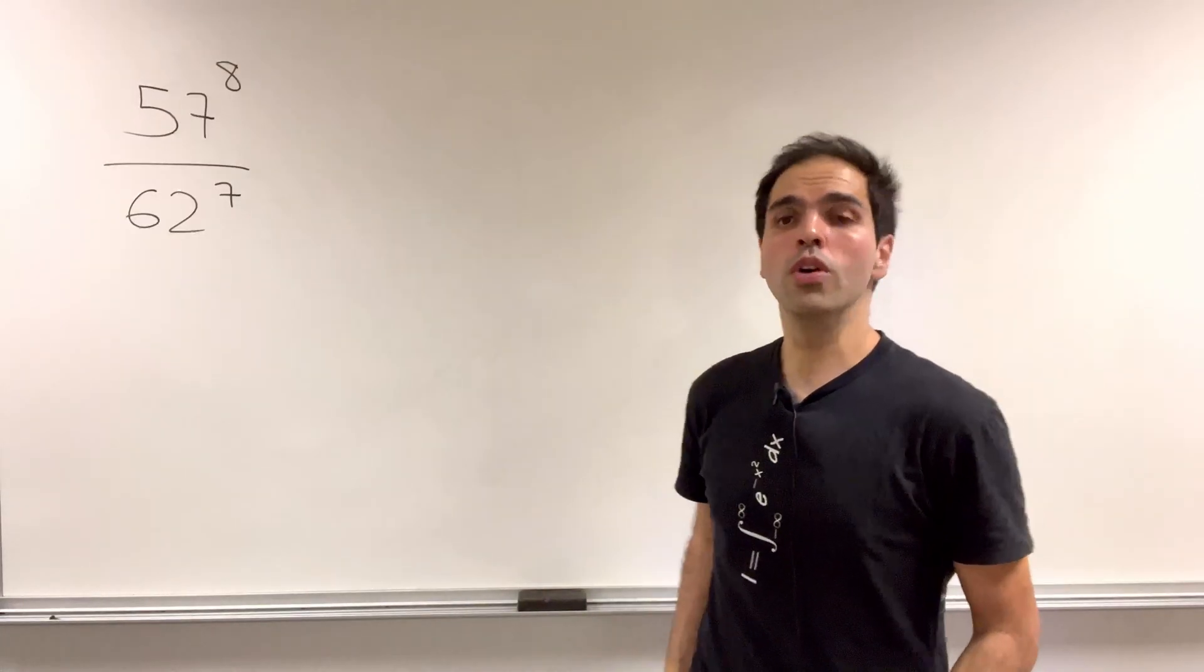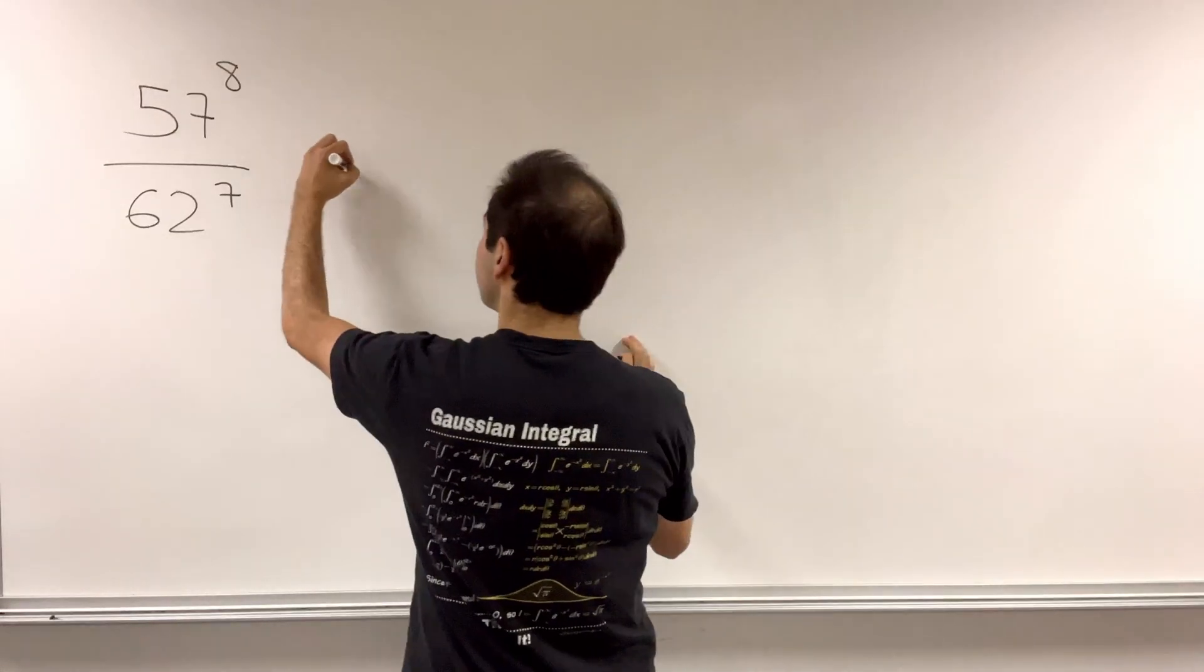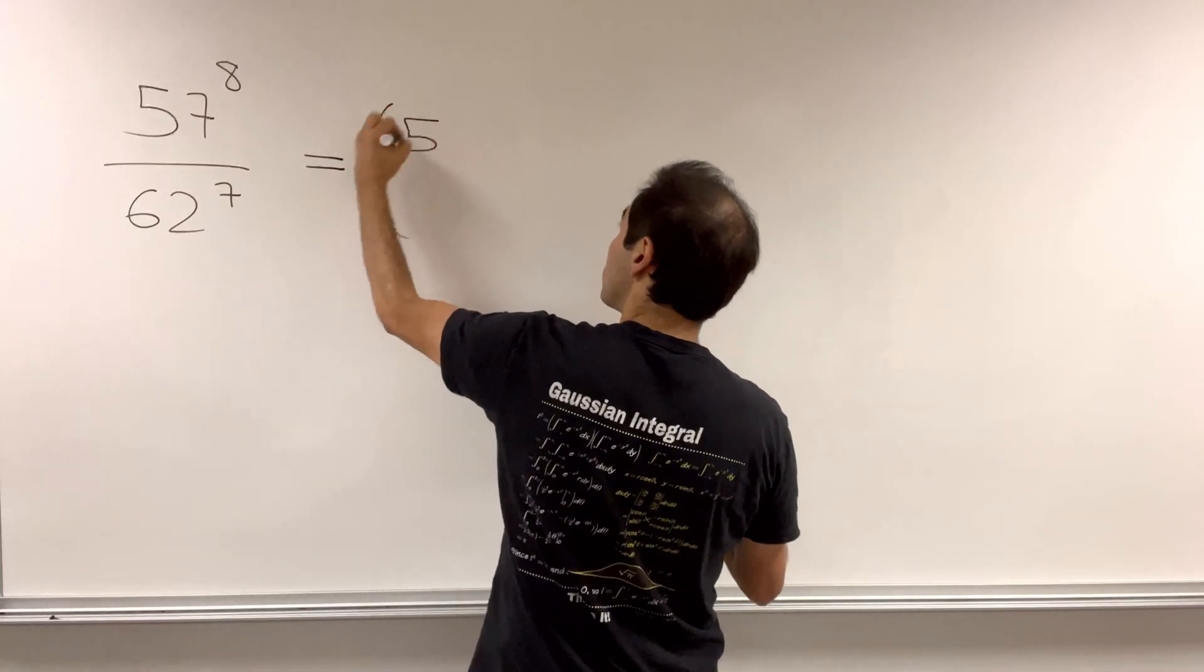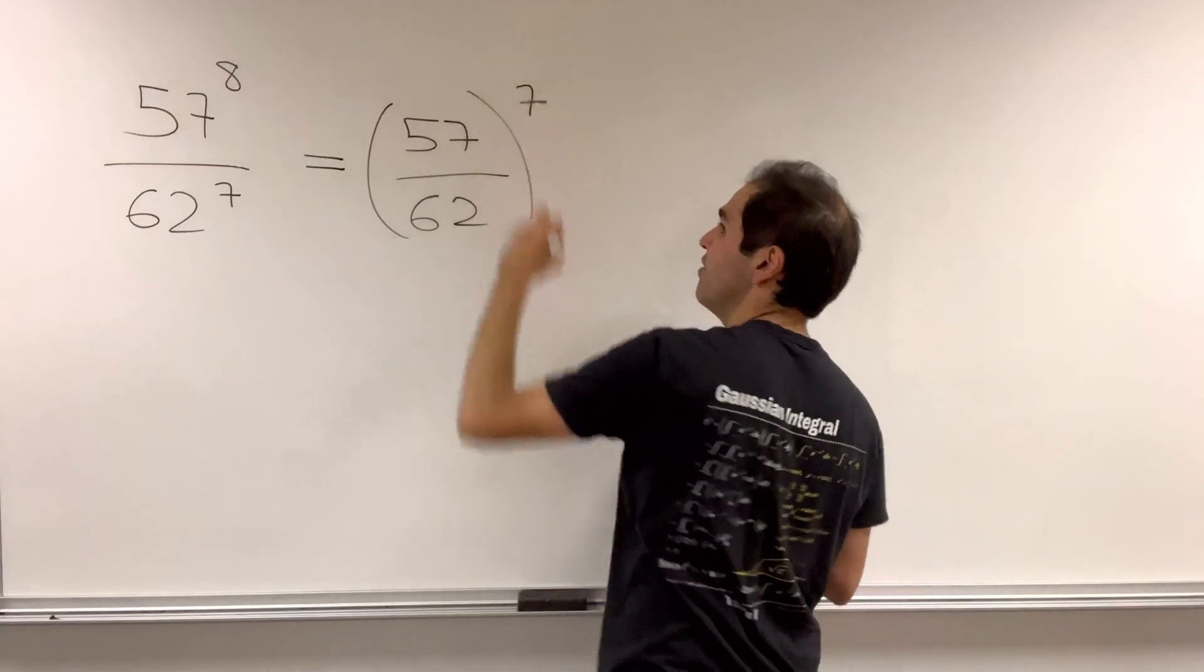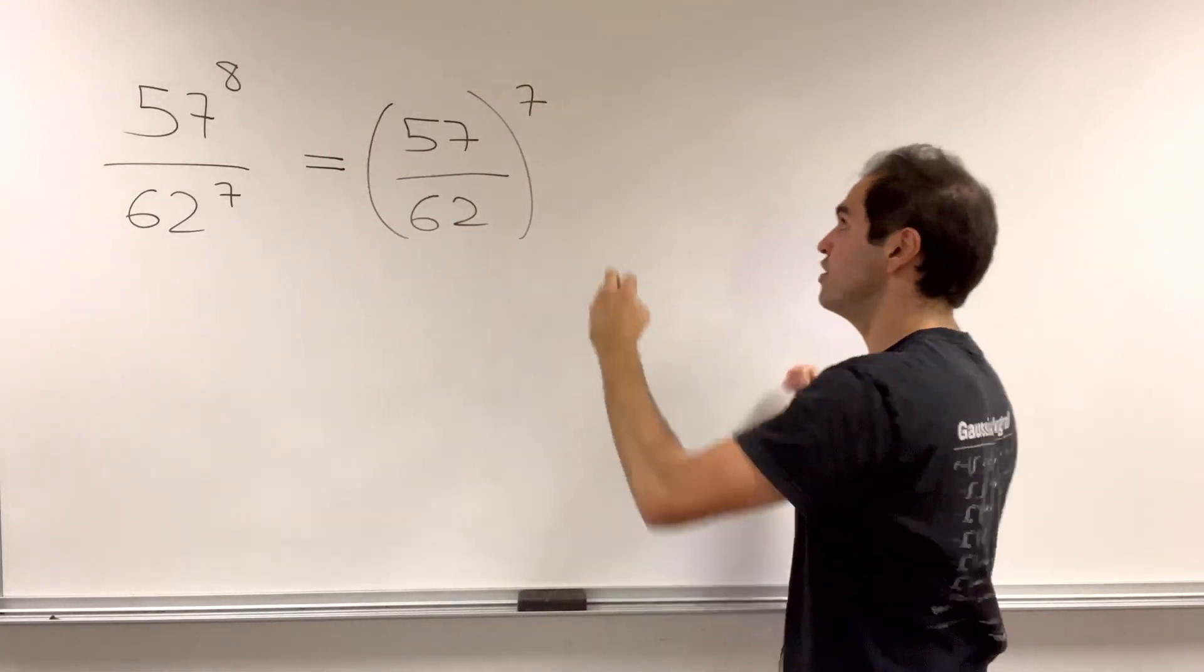Consider the ratio of the 2, which in turn we can write as a 7th power as follows. It's 57 over 62 to the 7th times an extra 57.